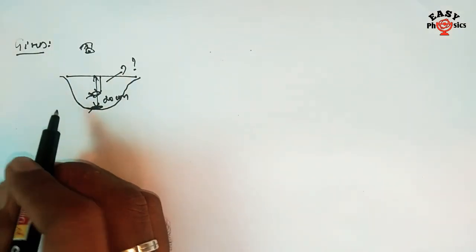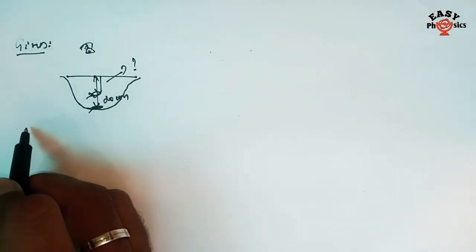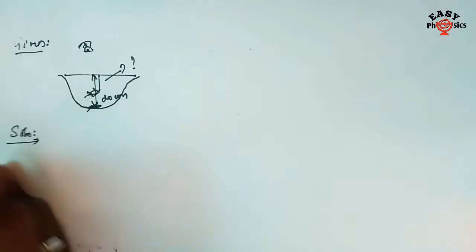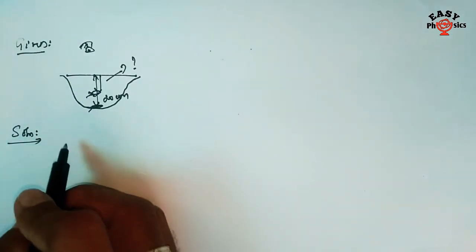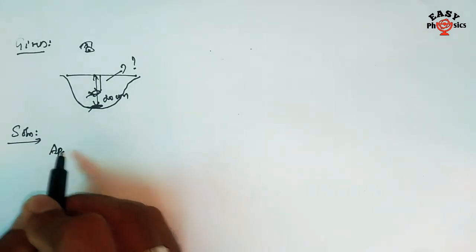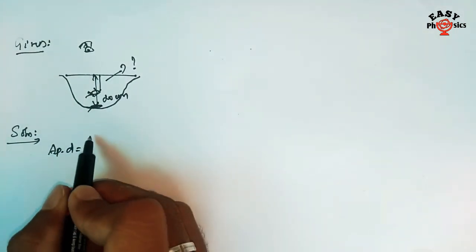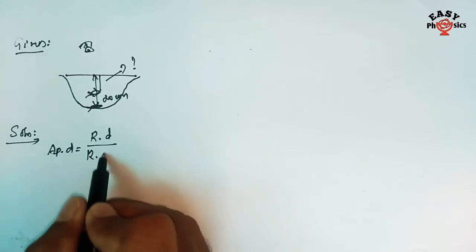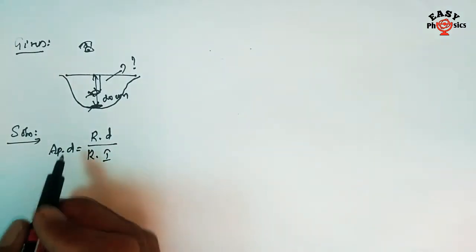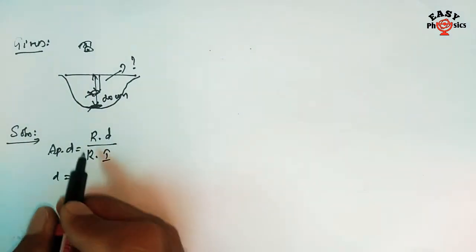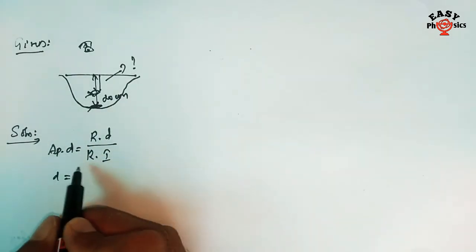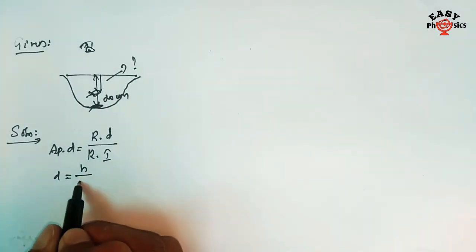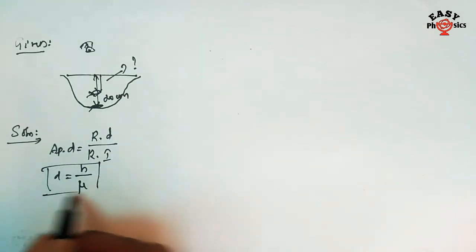The apparent depth is equal to real depth divided by refractive index. That is: apparent depth = real depth h divided by refractive index mu. This is the relation.